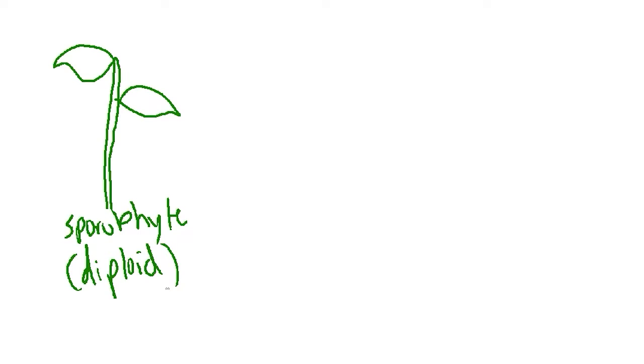Plants also changed a lot. Plants have something called alternation of generations. This is a pretty important thing to understand because it's asked basically every time, and it's fundamental to plants because all plants have it. The thick, big, normal plants you see every single day are called sporophytes. These sporophytes are diploid, meaning they have two sets of each chromosome. You gotta know whether it's diploid or haploid.